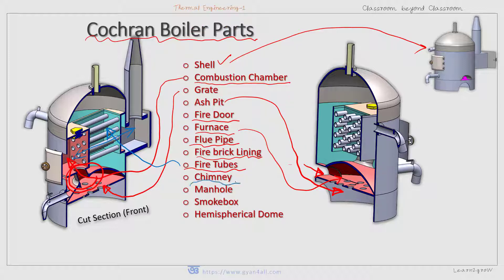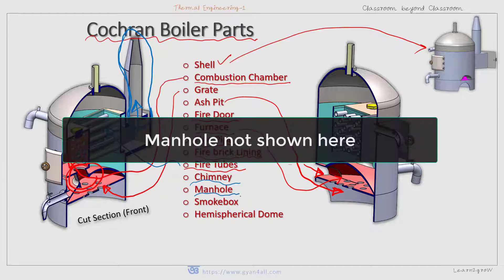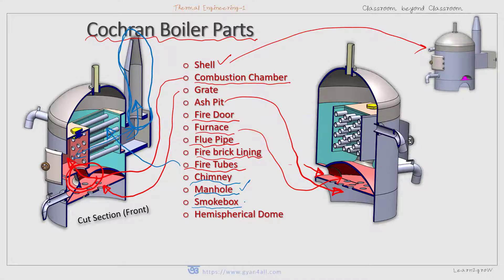Then the chimney, which is attached to the smoke box. It is used to transfer the flue gas coming from the fire tubes to the atmosphere — this chimney discharges smoke from the smoke box to the atmosphere. Then the manhole — like the simple vertical boiler, there must be one manhole, though it is not shown in this diagram. Then the smoke box: it is the place before the chimney, and it connects the chimney and the fire tubes.